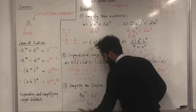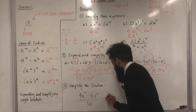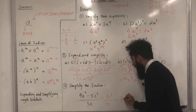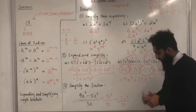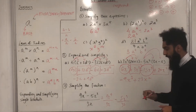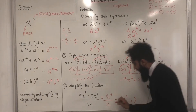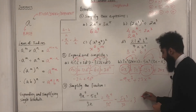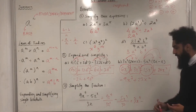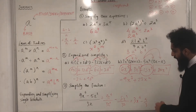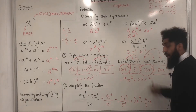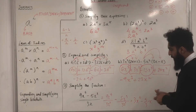Using this rule, I write 9X to the power 5 over 3X, minus 5X cubed over 3X. For the first fraction: 9 divided by 3 is 3, and subtracting the powers of X gives 5 take away 1 equals 4, so 3X to the power 4. For the second fraction: 5 divided by 3 can't simplify further. X cubed over X — subtracting powers: 3 take away 1 is 2. So the result is 3X to the power 4 minus 5 over 3 times X squared.